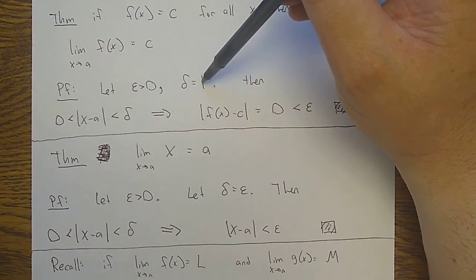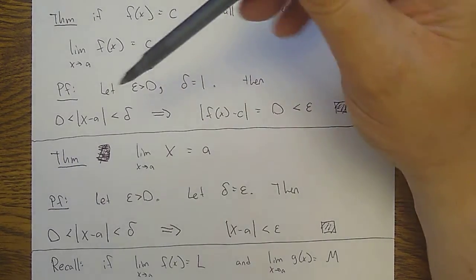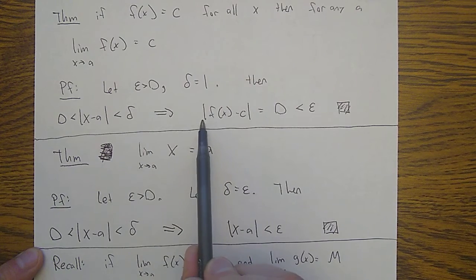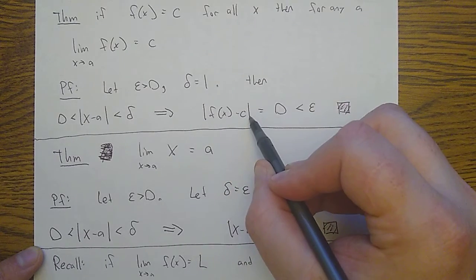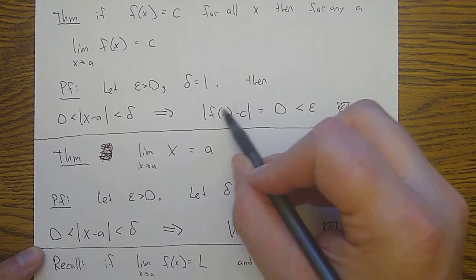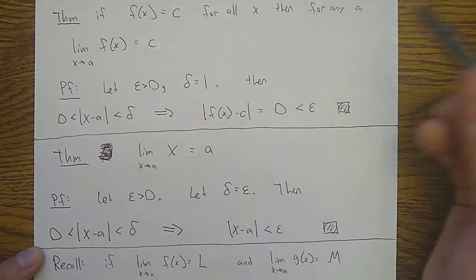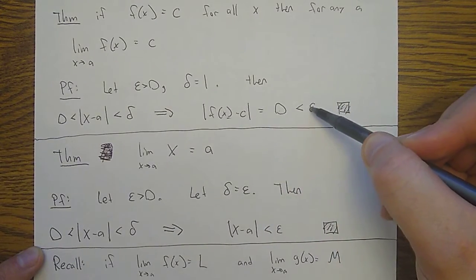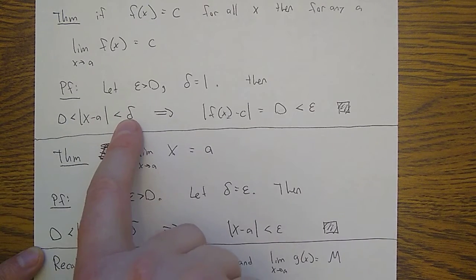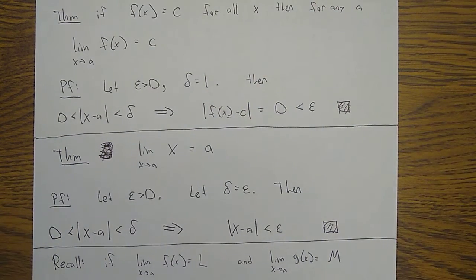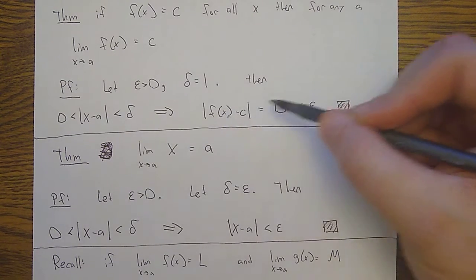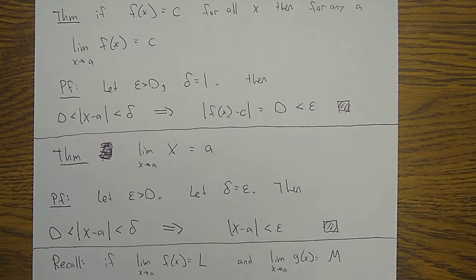Any positive number would work because all I need is for this to imply that the absolute value of f(x) minus c is less than epsilon. But for a constant function, this is always exactly zero — no matter what x is, we're just doing c minus c. f of x is always c, so this is always zero, which is always less than epsilon. We don't even need to use the delta condition. That's why delta doesn't even matter. We needed to choose a delta so I just chose something. The proof is done — we got that the absolute value of f(x) minus its supposed limit is less than epsilon.